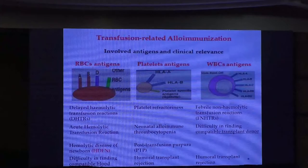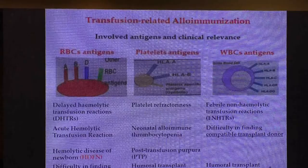What is the pathophysiology? On the first exposure to foreign antigens, moderate production of IgM and IgG antibodies to the foreign antigens occurs. On repeated exposure, rapid production of large amounts of IgG occurs. What are the transfusion-related alloimmunization types?